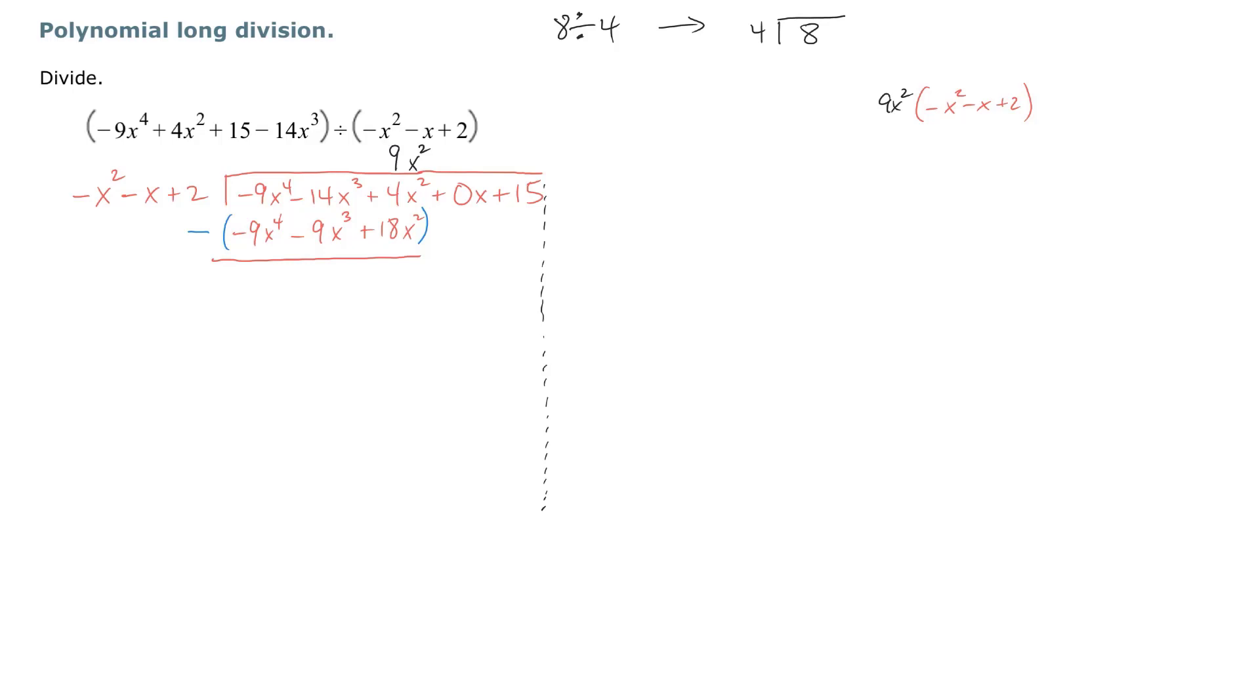Now we get negative 5x to the third minus 14x squared. And we are now at the step called bring down. What are we going to bring down? We're going to bring down, not necessarily the zero times x, because that is a zero quantity.